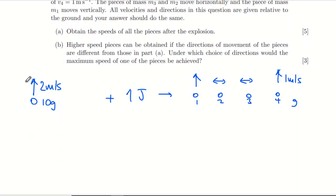All velocities and directions are given relative to the ground. Obtain the speeds of all the pieces after the explosion. Our options here are we've got conservation of momentum, which we can do in two directions, and we can do conservation of energy as well.